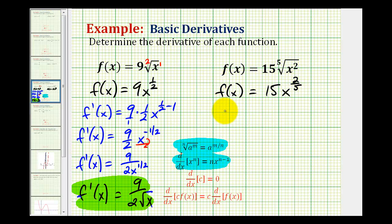And now we can apply the power rule. F prime of x is going to be equal to fifteen times the derivative of x to the two-fifths. So we'll have two-fifths times x to the two-fifths minus one.